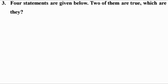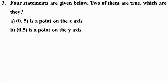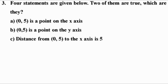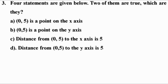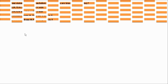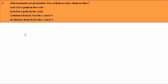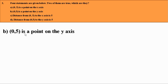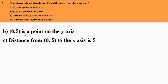Third question. Four statements are given below and two of them are correct. Let us look at the point (0, 5). The x-coordinate is 0 and therefore it is on the y-axis. So, the second statement — (0,5) is a point on the y-axis — is correct. Since it is on the y-axis, the distance from the x-axis is 5. So, the third statement — distance from (0,5) to the x-axis is 5 — is also correct.